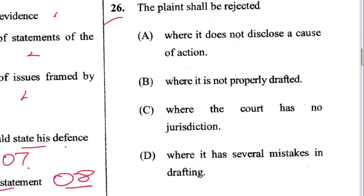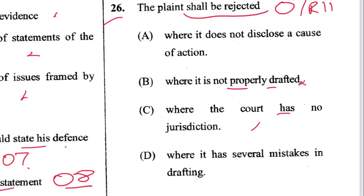Question 26: The plaint shall be rejected where it does not disclose the cause of action. The provision for rejection of plaint is in Order 7 Rule 11. Where it is not properly drafted or has several mistakes — no; the correct answer in clause (a) is where it does not disclose the cause of action. A is the answer.